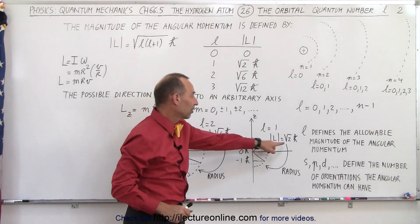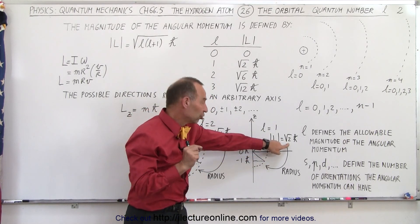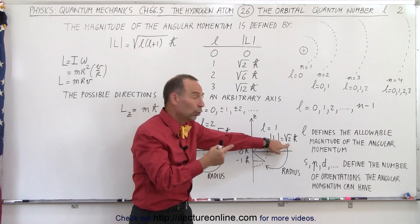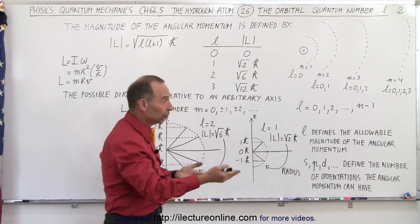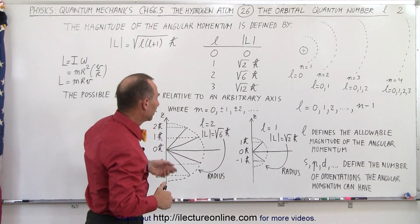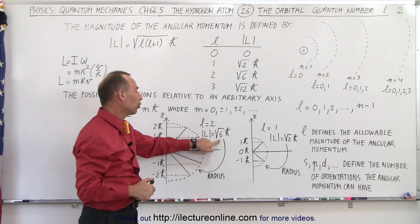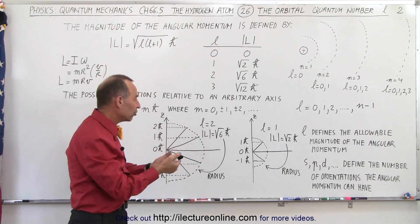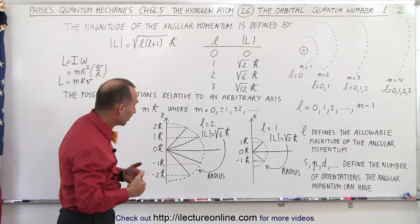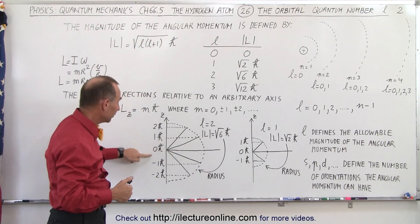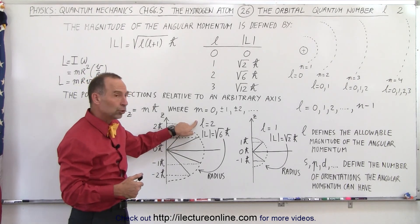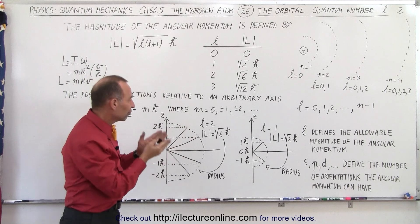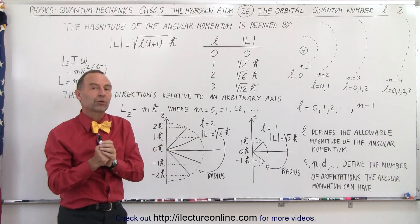This is because the maximum integer you can pull from the square root of 2, which is about 1.4, is 1, 0, or negative 1. When L equals 2, the square root of 6 is between 2 and 3, so the integer values are 2, 1, 0, negative 1, or negative 2. So when L equals 2, this represents the D sub-shell, and there are five possible directions for the angular momentum.